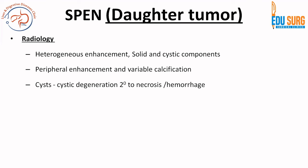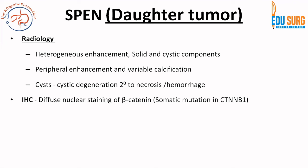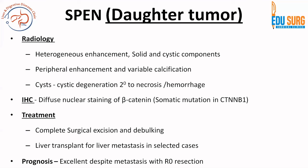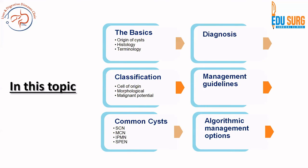The cysts in SPEN are due to cystic degeneration, which can be secondary to necrosis or hemorrhage. Immunohistochemistry will show diffuse nuclear staining of beta-catenin, due to somatic mutation in CTNB1. Treatment is complete surgical excision and debulking. If complete resection from a pancreatic standpoint is achieved, liver transplant for liver metastasis has been suggested in recent cases, as these patients are young and SPEN has low but aggressive malignant potential when present. Prognosis is excellent despite metastasis if R0 resection is achieved.